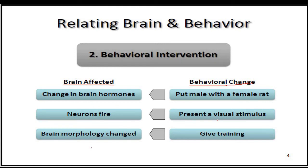Another example: when you present a visual stimulus, there will be what we call neuron firing. For instance, if you show someone a traumatic event, neurons will be firing and many memories will be recalled. Additionally, giving training will produce a change in brain morphology. It is said that knowing more than one language makes the brain develop more folds or convolutions. So when you train, there will be a corresponding change in brain morphology or its appearance.